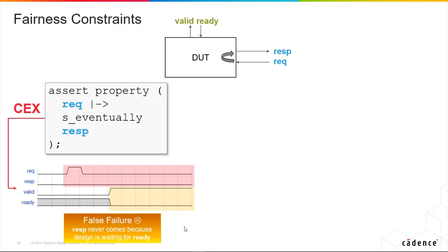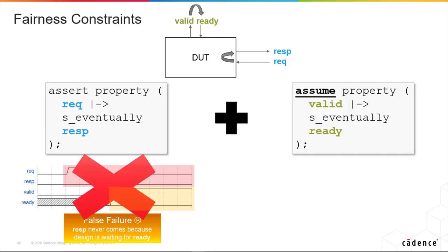So in order to overcome this, this is what we need, an assumption which prevents that happening. Okay, so that's known as a fairness constraint.